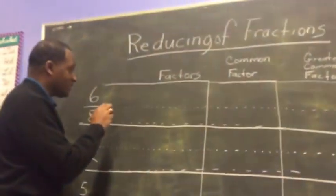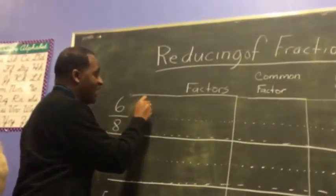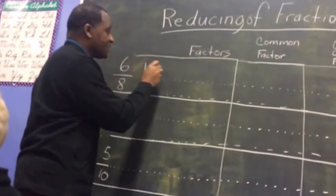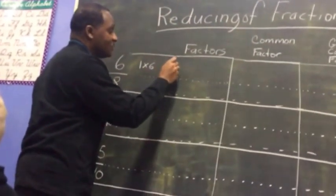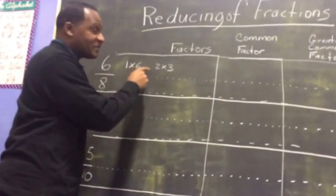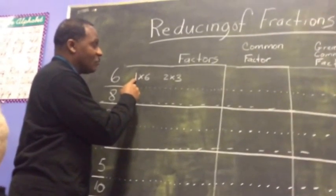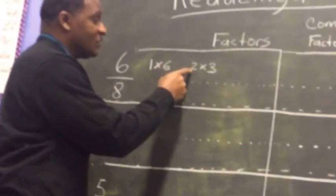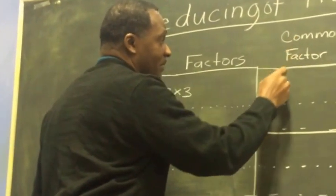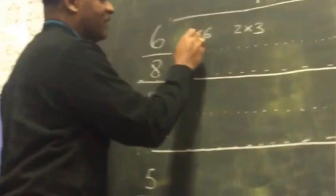We want to see what numbers are the same. 6 has a factor of 1 times 6 equals 6, and also 2 times 3 equals 6. So 1 times 6 equals 6 and 2 times 3 equals 6, giving us the factors 1, 6, 2, and 3. Let's list those and then find out what the factors of 8 are.